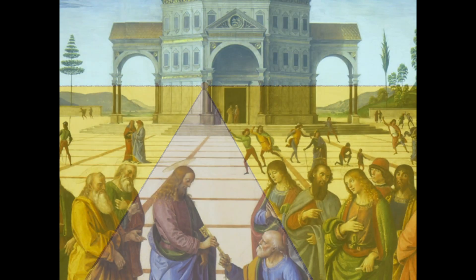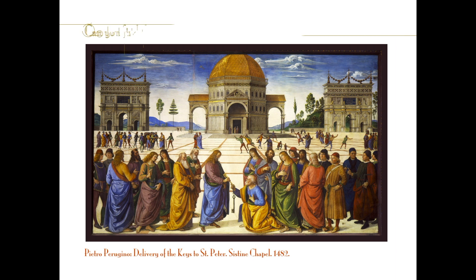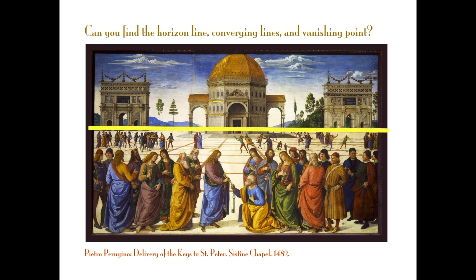Here's an example of a painting made shortly after linear perspective had been discovered. Can you find the horizon line? And the converging lines? And the vanishing point?